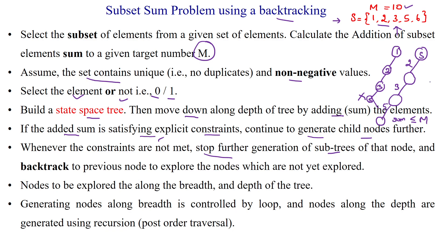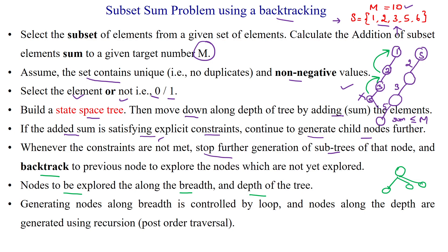If it is not giving you the solution, as in the previous step, we have to apply backtracking. If this solution does not work, we have to select another element. Nodes are to be explored along both the breadth and depth of the tree — it goes in the depth of the tree and also the breadth of the tree, so we explore nodes in both ways.